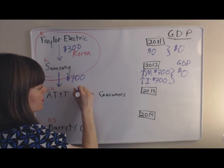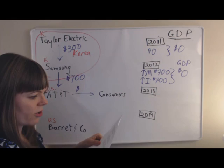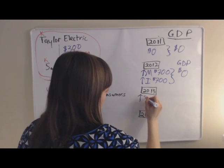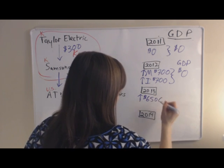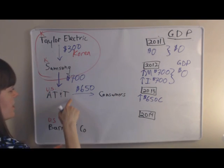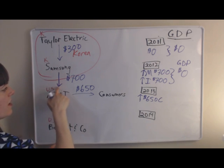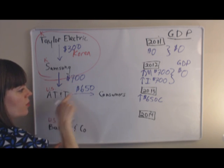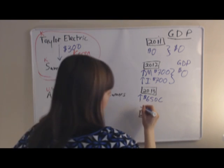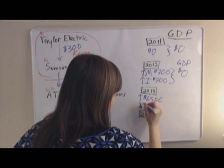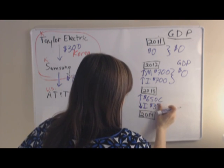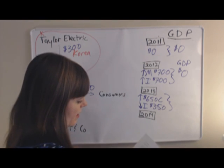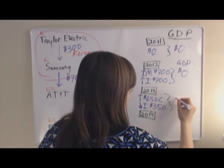In 2013, AT&T sells to consumers for $650. We have a $650 increase in consumption. We need to ask if we need to decrease inventories because they were previously accounted for. Yes — they sold half their inventories to consumers, so half of $700 is a decrease in inventories of $350. GDP in 2013 is $300.